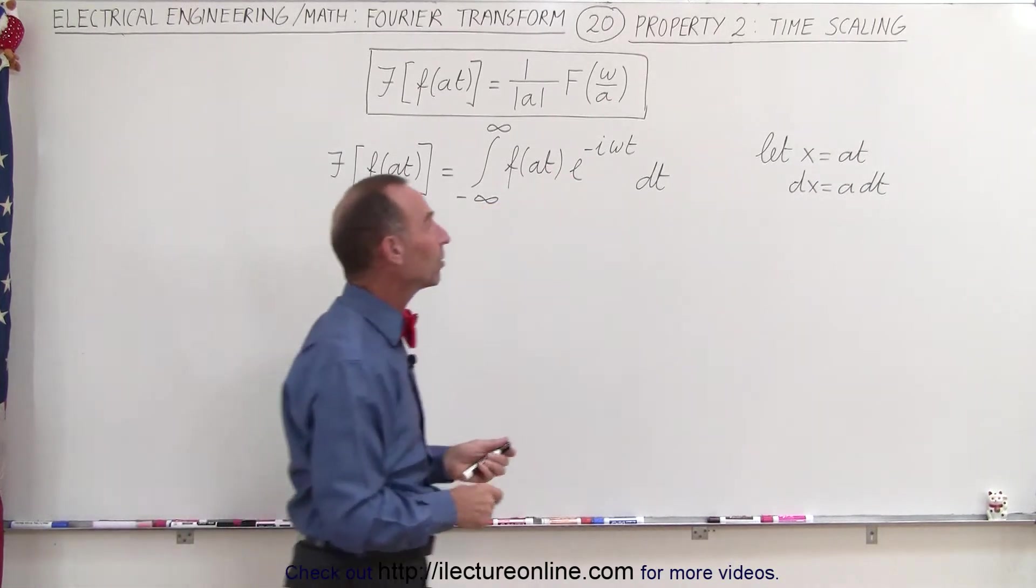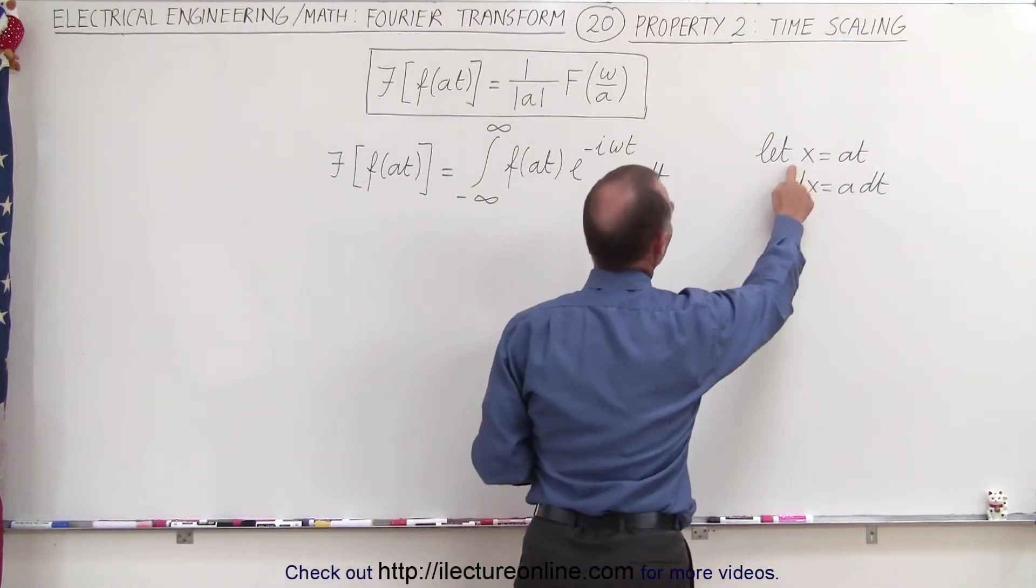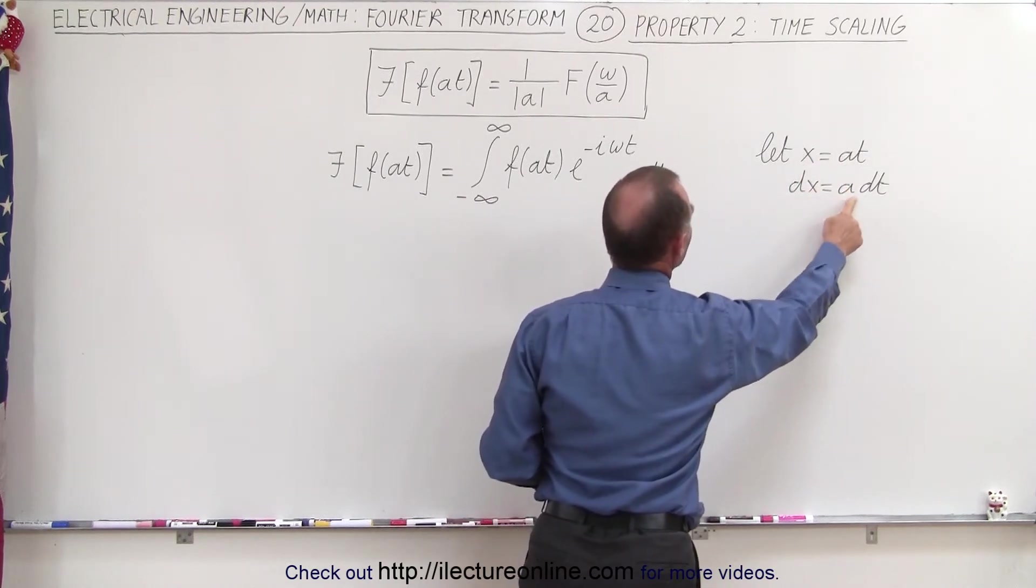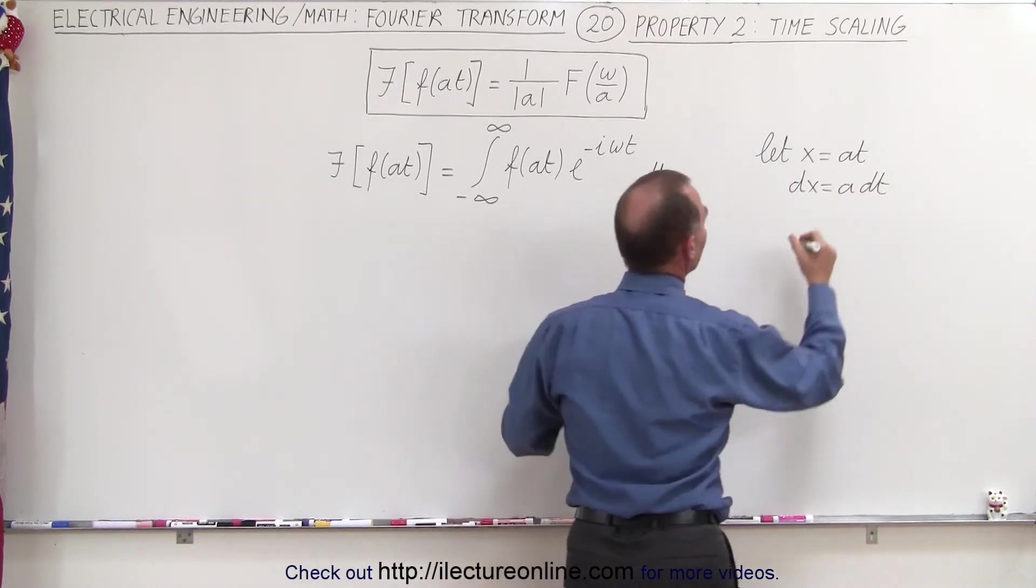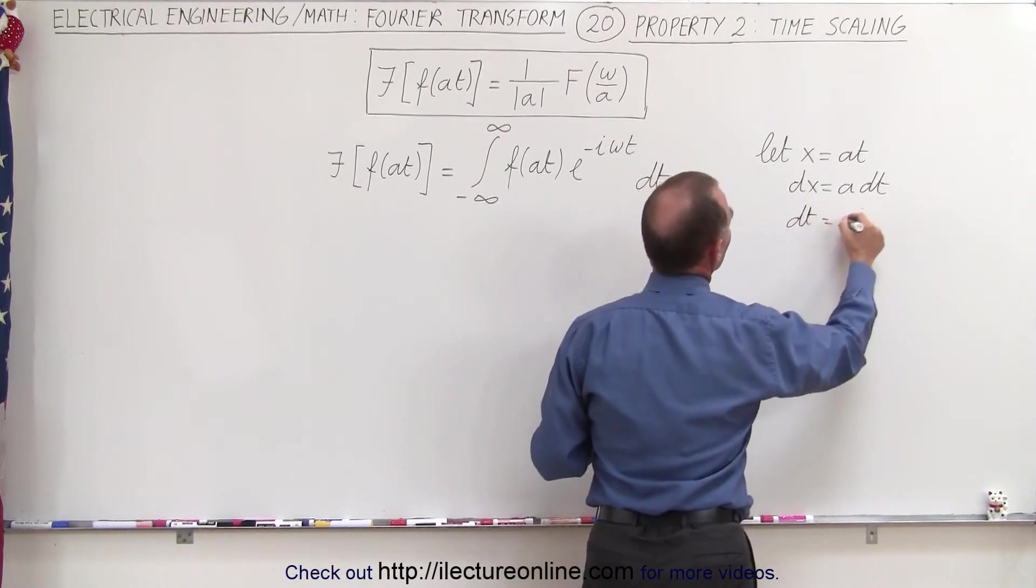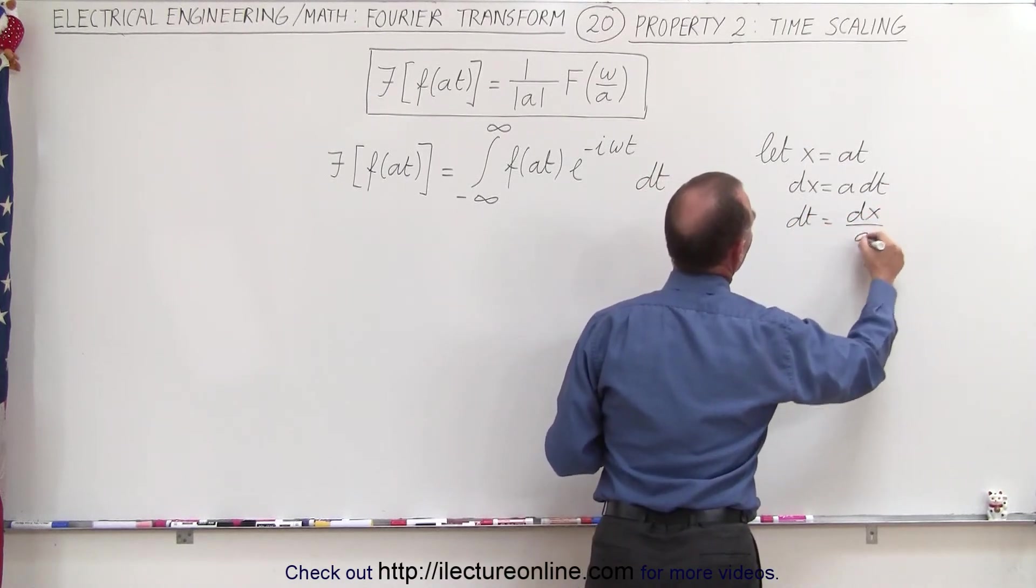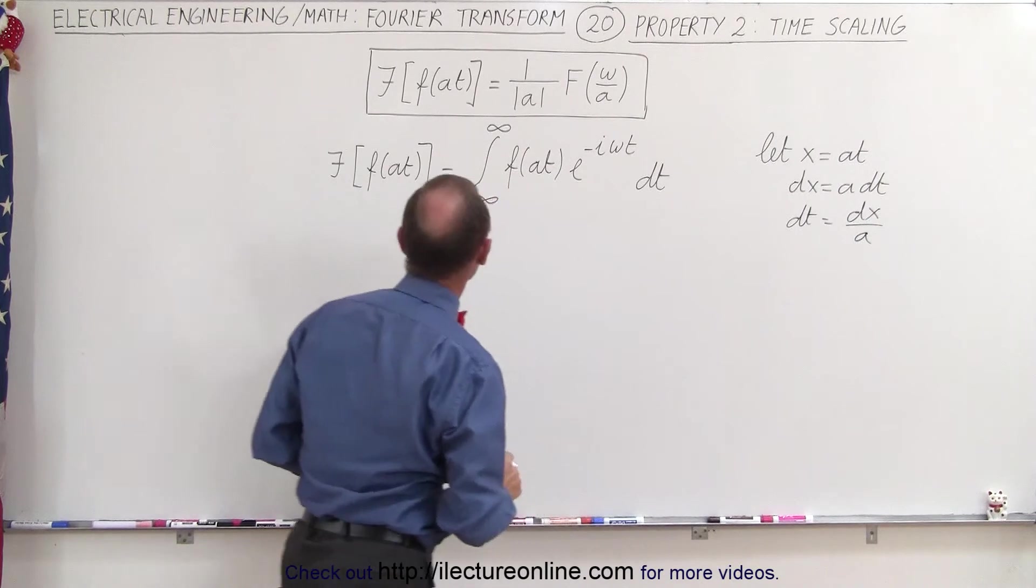Now we're going to make a substitution. We're going to let x equal at and dx equal a times dt, which means that dt will then be equal to dx divided by a. So let's make those substitutions.